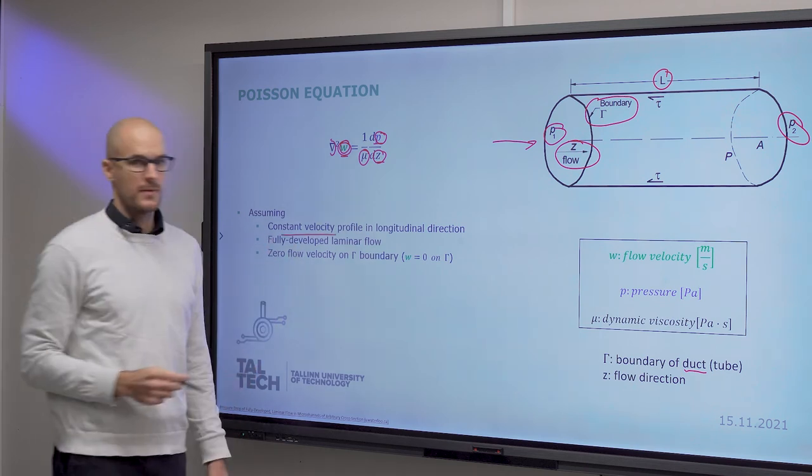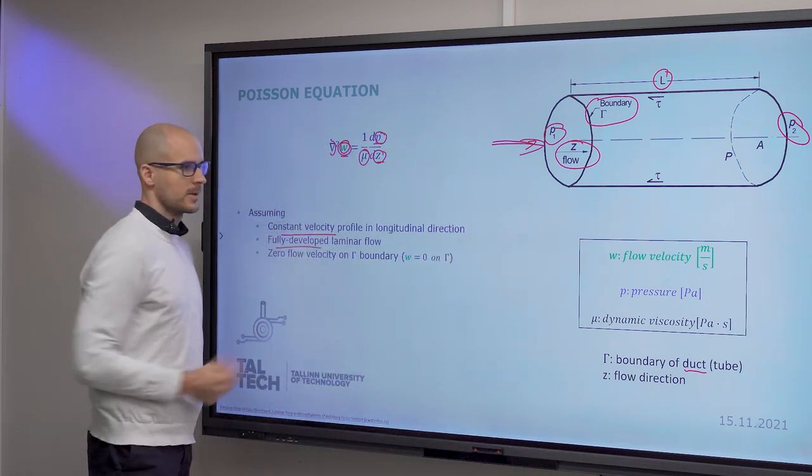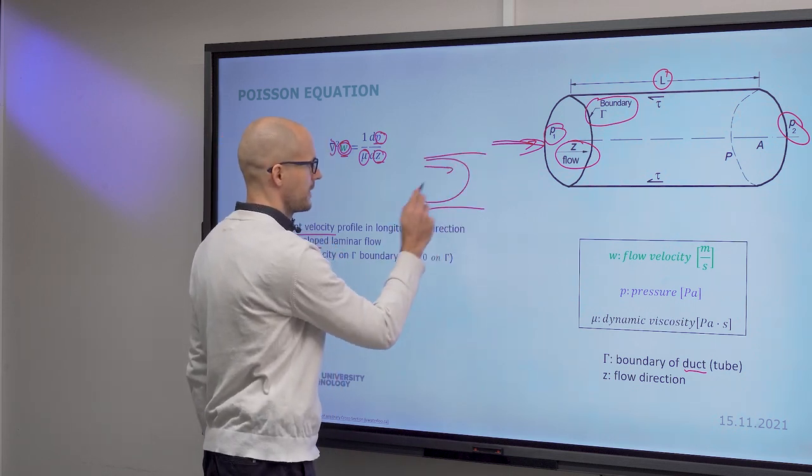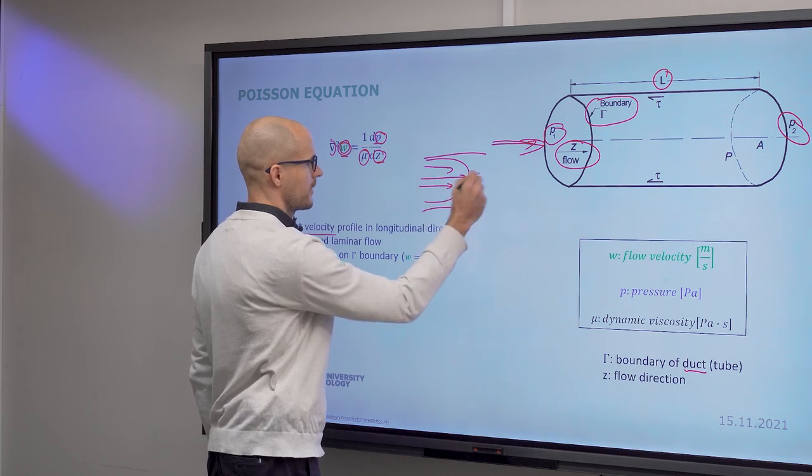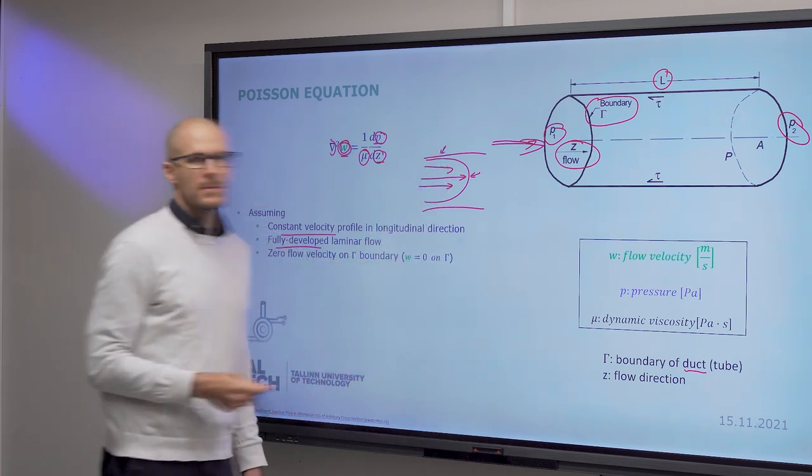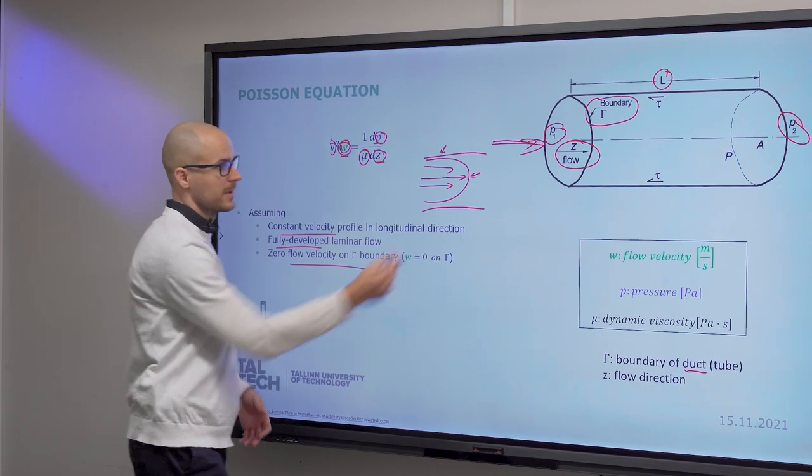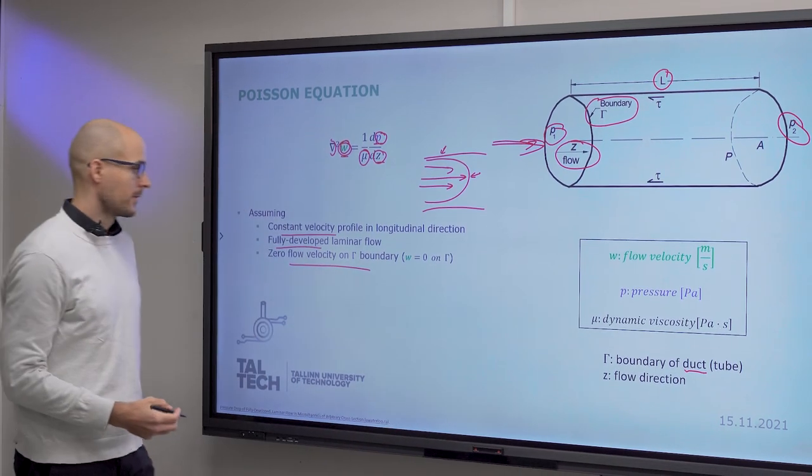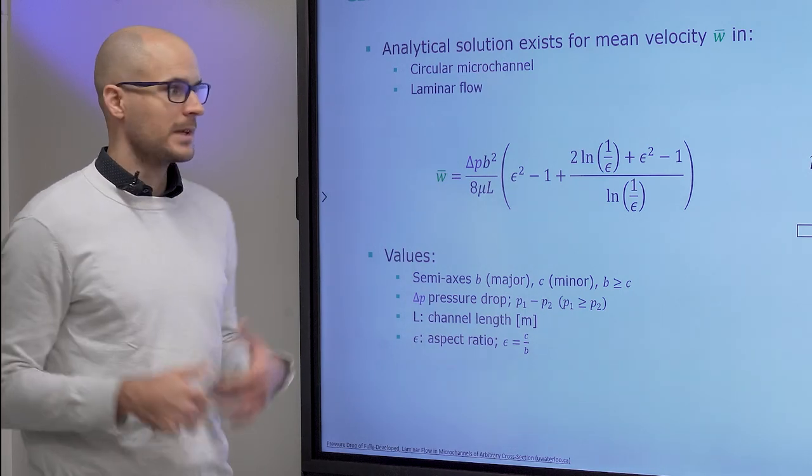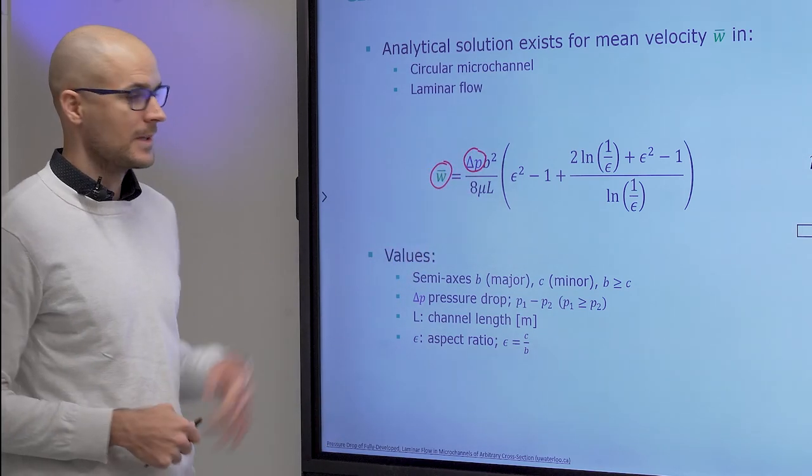Assuming constant velocity in longitudinal direction and a fully developed laminar flow. What does that mean? That means the parabolic flow profile that you have already seen, where flow velocity is the highest in the midsection and lowest close to the wall. Actually, lowest means zero. So on the boundary, which is denoted gamma here, flow velocity is zero. What this thing gives us is a way to calculate from the pressure drop the flow velocity, the average flow velocity.